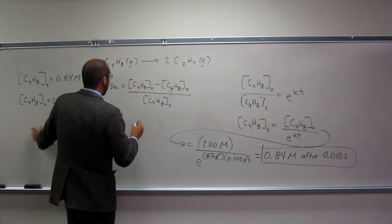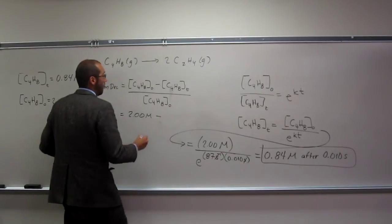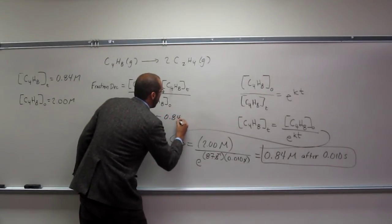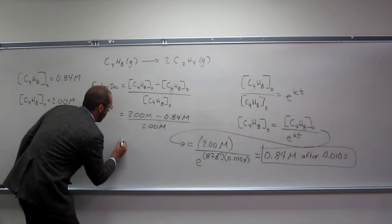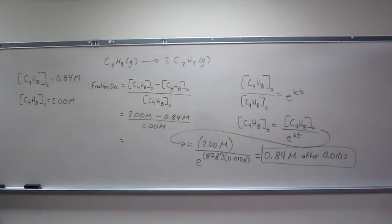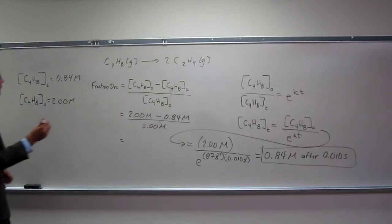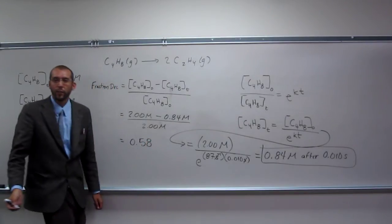So, what do we got first? It's 2.00 molar minus 0.84 molar divided by 2.00 molar. Okay, so, what are my units? What are my units? Try again. No units, because it's a fraction. Fractions don't have units. That's the fraction decomposed.